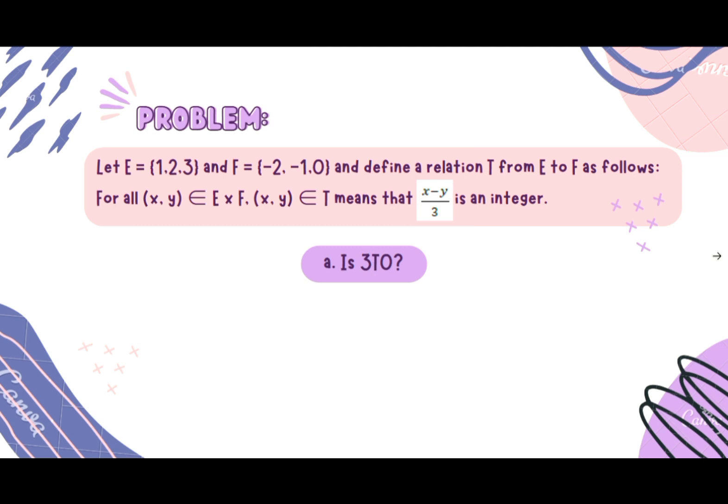For all ordered pair (x, y) an element of E cross F, ordered pair (x, y) an element of T means that (x - y)/3 is an integer.